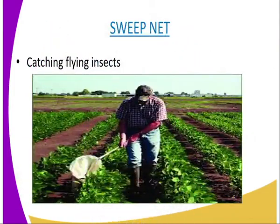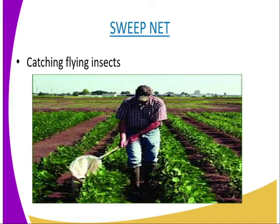Having covered the precautions, we are now going to look at the apparatus — the diagrammatic representation of the apparatus used to collect the specimen. One of the apparatus used in the collection of specimen is the sweep net, which is used to catch flying insects.